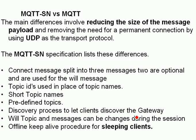The specification lists the following differences. Connect messages are split into three messages, two of which are optional. Topic IDs are used in place of topic names — you use a number instead of a name, which basically shortens the topic.